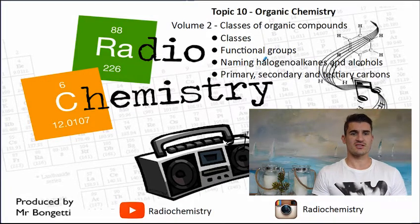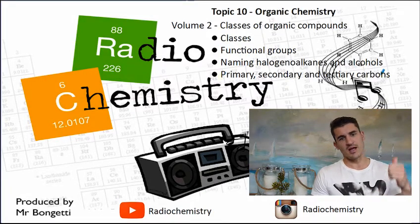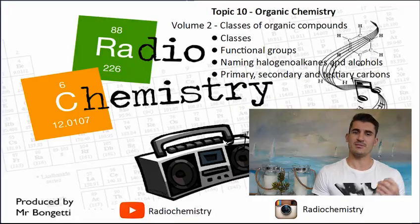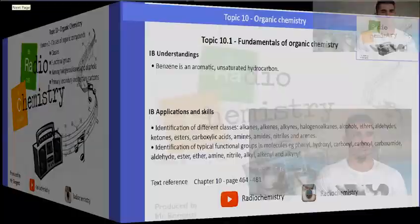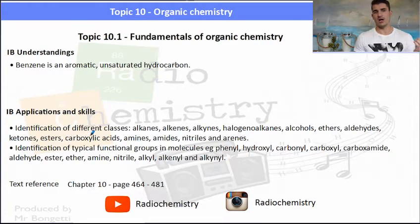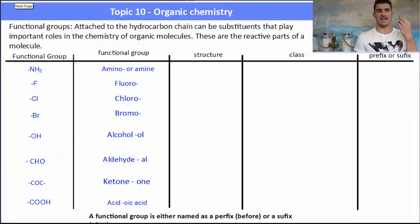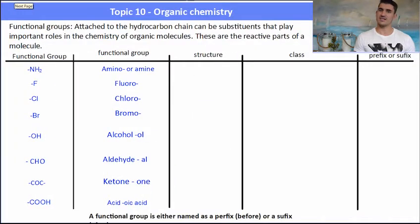Volume 2: Classes of Organic Compounds. We talk about classes, functional groups, naming some of those functional groups, and then primary, secondary, and tertiary carbons. For IB understandings and applications, we talk about benzene very quickly, and then we look at identifying and naming different classes and functional groups.